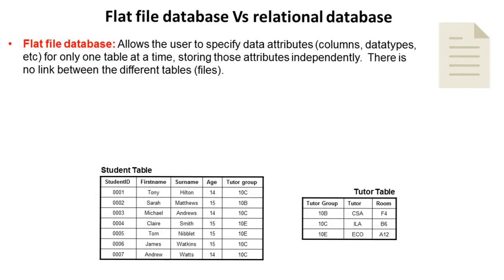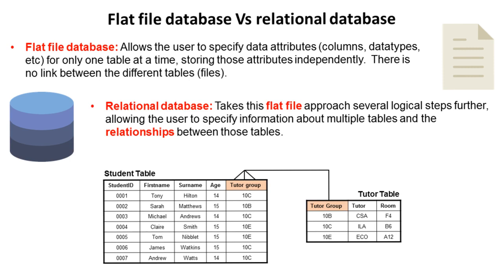Before we dive in, it's important to understand the difference between a flat file database and a relational database. A flat file database allows the designer to specify data attributes like the columns and the data types for only one table at a time, storing those attributes completely independently — there's no link between the different tables or files. For most large organisations, this is a very simplistic solution and won't be sufficient. They will need to make use of a relational database, which takes a series of separate disconnected flat file tables and creates relationships between them.